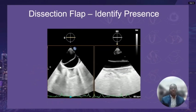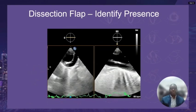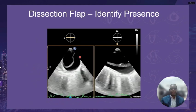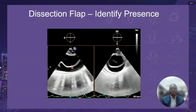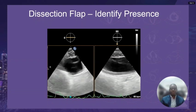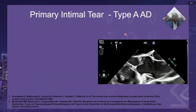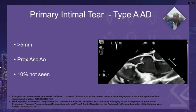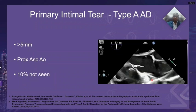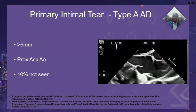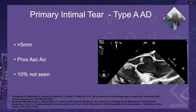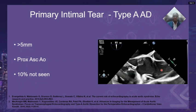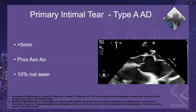An aortic dissection flap will appear as an undulating linear echodensity within the aortic lumen, and discontinuities within the flap are known as intimal tears. The primary intimal tear is usually more than 5 mm in width, sometimes as wide as 7 to 10 mm, and they are frequently located in the proximal ascending aorta. About 10% of cases, the main intimal tear may not be seen because it is located in a blind TEE area, such as the abdominal aorta or distal ascending aorta. In these cases, contrast may suggest where the entry tear is located.